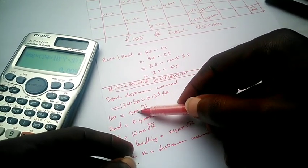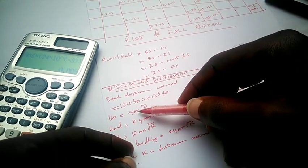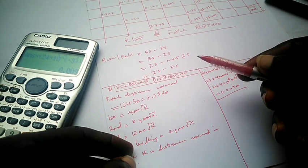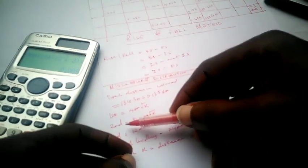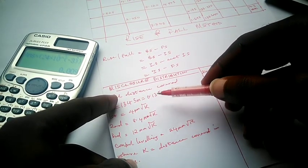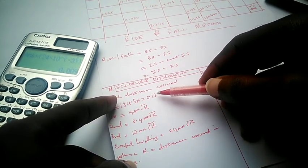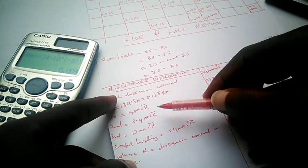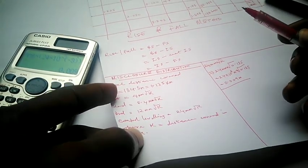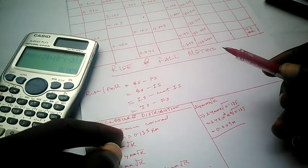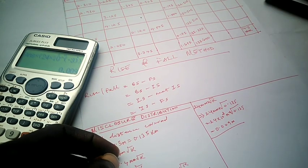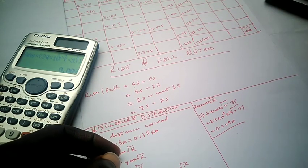For first order, the distance covered in kilometers is multiplied by 4 mm, which is the same as 4 × 10⁻³ meters. For second order, it is 8.4 mm, same as 8.4 × 10⁻³ meters, times the square root of the total distance in kilometers. Thanks for coming to class. If you haven't subscribed to the channel, please subscribe, and I'll see you in the next video. Take care and stay safe.